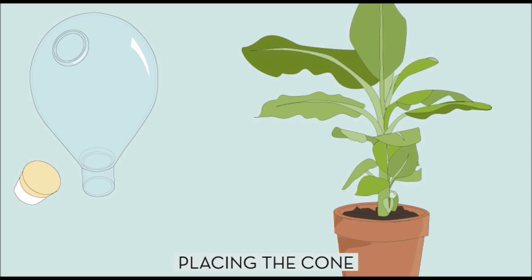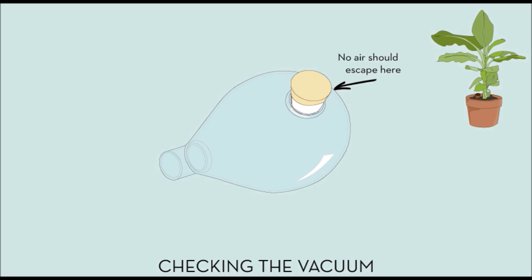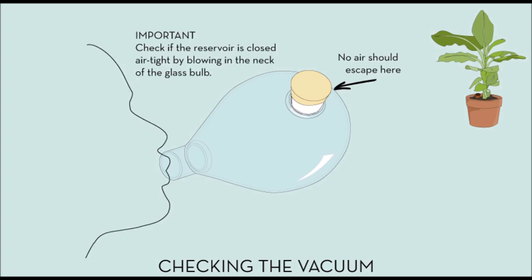Gently push the cone into the soil near the plant's roots. Use the cork to tightly close the top hole of the reservoir. Blow firmly into the neck of the reservoir to make sure no air can escape.